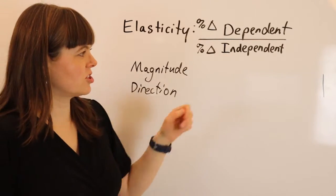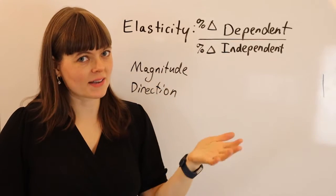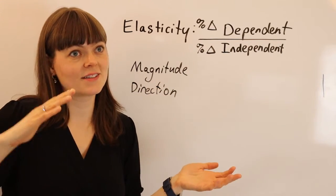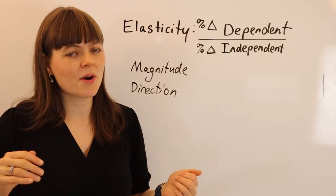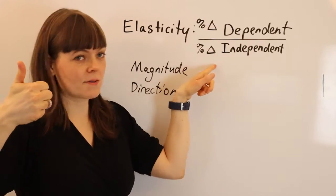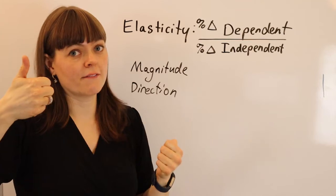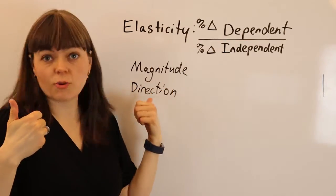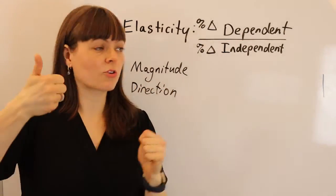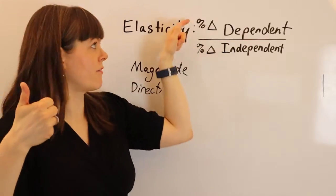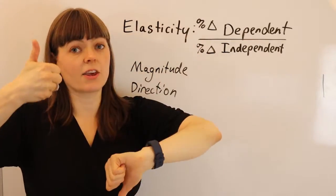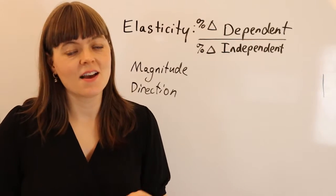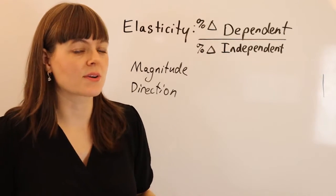Direction simply says: is there a positive or negative relationship between these two variables? Is the slope on the graph positive or negative? If you increase the independent variable and the dependent variable increases, it's a positive direction. Or when you increase the independent variable and the dependent variable decreases, they go in opposite directions — that's a negative relationship, and the slope on your graph is going to be negative.